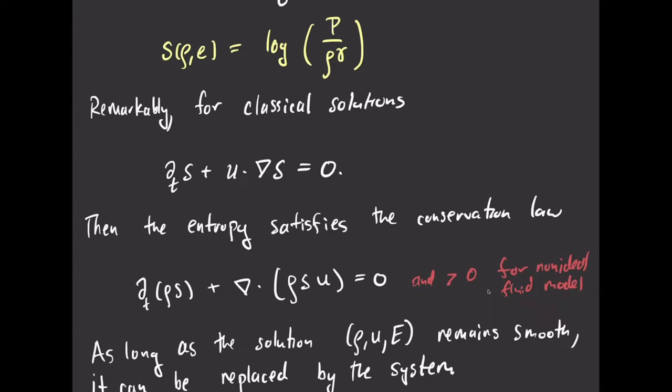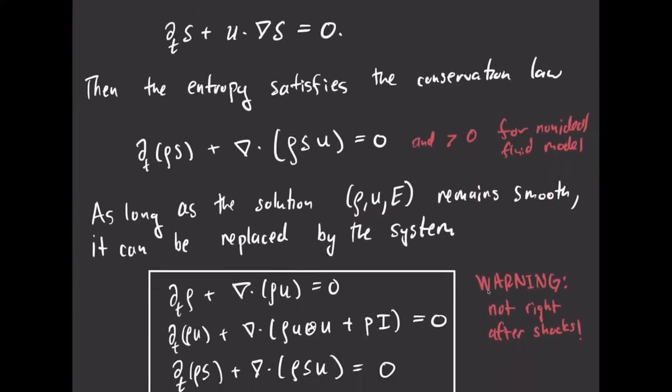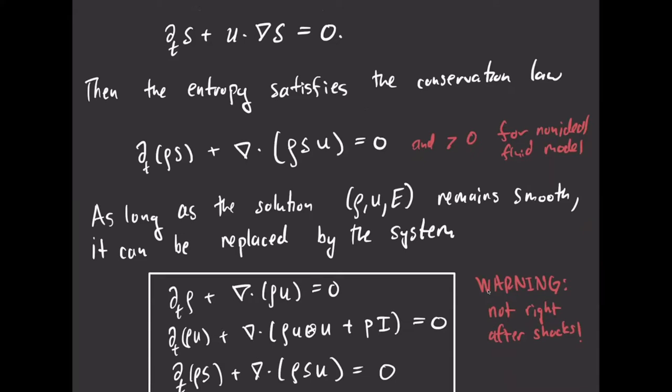If you had the non-ideal Navier-Stokes equations, which include viscous friction effects, then according to the second law of thermodynamics, the model predicts that entropy is always being produced on average when you integrate. So this equality turns into some contribution from dissipation. Whenever the Euler solution is smooth, you can replace the original energy equation with this entropy equation — a completely equivalent system — and it's often this system which is solved in practice for strong solutions.